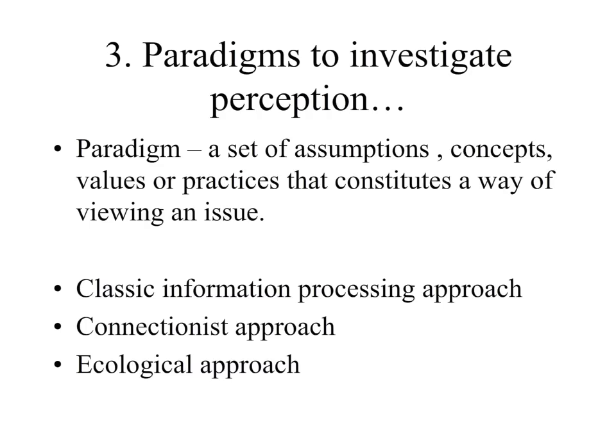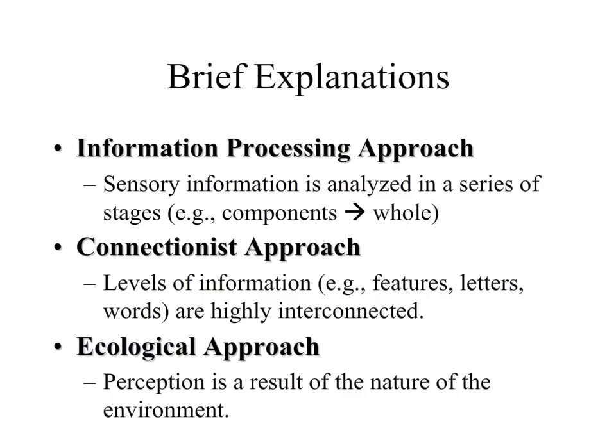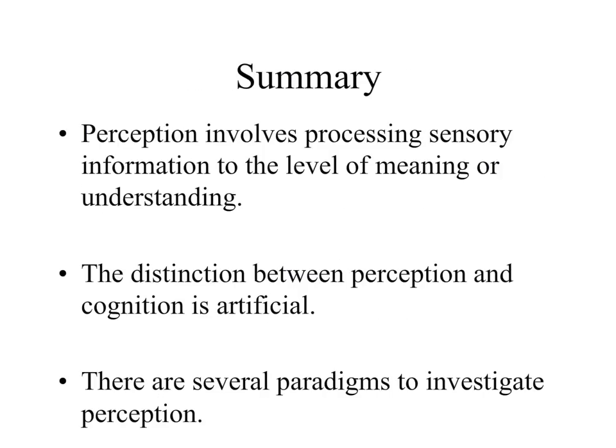We need to bring in a few more definitions before we can further explore perception. We're going to start with an understanding of certain frameworks, or paradigms, used to investigate perception. A paradigm is a set of assumptions, concepts, values, or practices that constitutes a way of viewing a particular issue. In approaching the study of perception, we can rely on a classic information processing approach, a connectionist approach, or the ecological approach. We'll explore these three approaches in more detail in Module 2.2. Here's a summary of Module 2.1: perception involves processing sensory information to the level of meaning or understanding; the distinction between perception and cognition is artificial; and there are several approaches or paradigms to investigate perception.